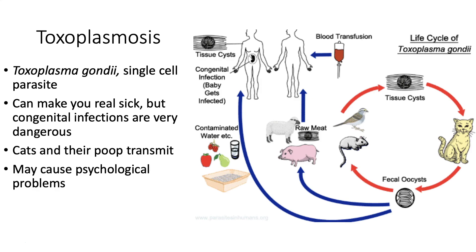Now let's go on to parasites. I understand a lot of people get confused when I say a virus is a parasitic organism or a fungus is a parasitic organism. Usually when we say parasites, we're referring to very large eukaryotic organisms that are infecting humans or animals. One really common one would be toxoplasmosis, caused by toxoplasma gondii. It's a single-celled parasite - these are all eukaryotes. It can make you really sick, but it's not usually the main issue.